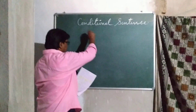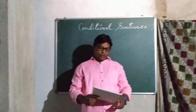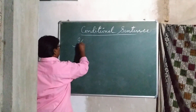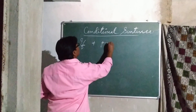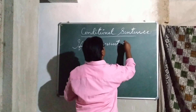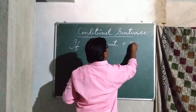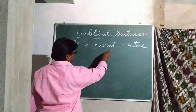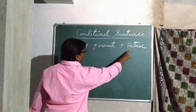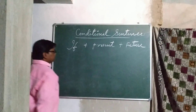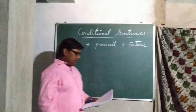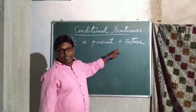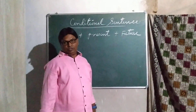Before we make these sentences, we have to use Rule Number One. Rule Number One is: if clause plus present tense plus future. That means: if plus simple present tense plus simple future tense.